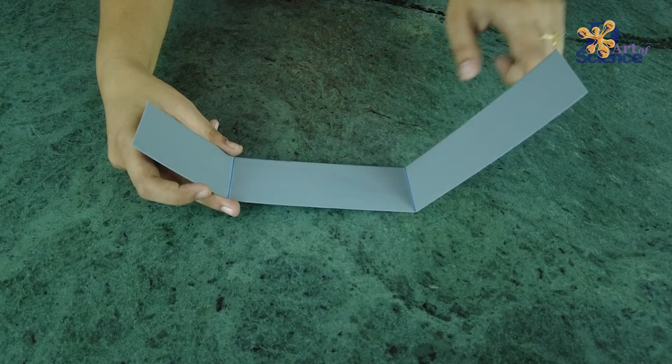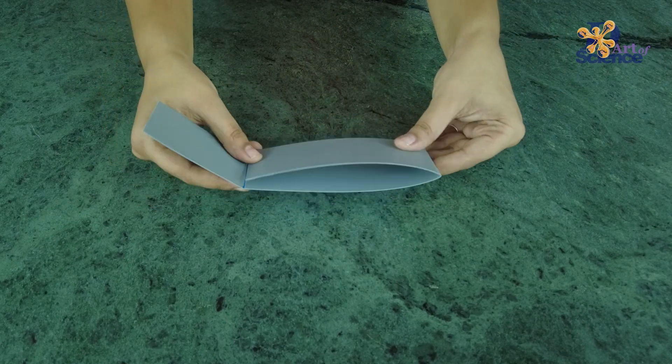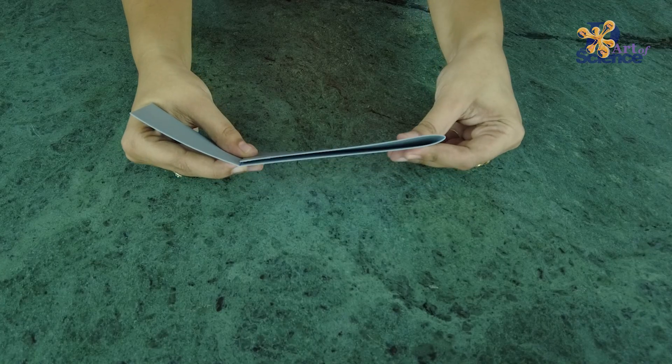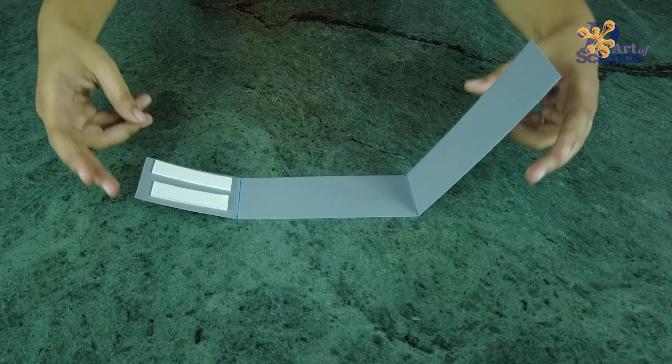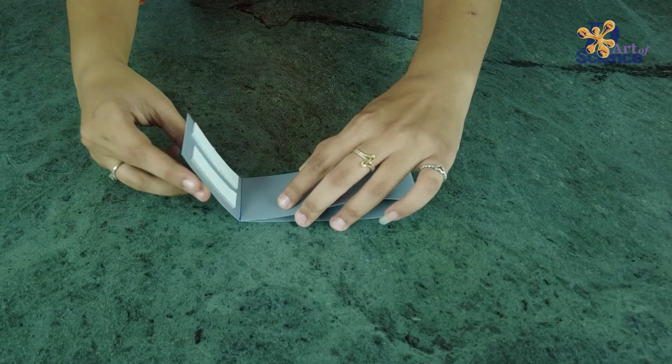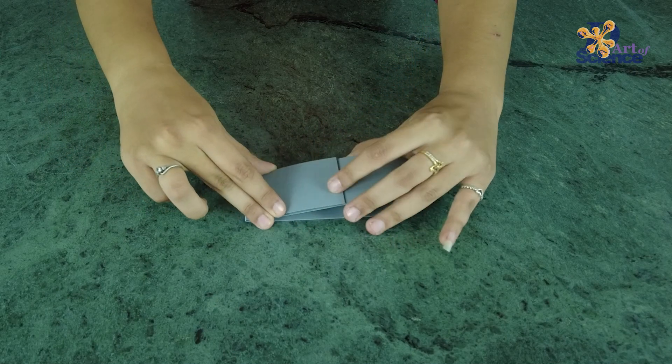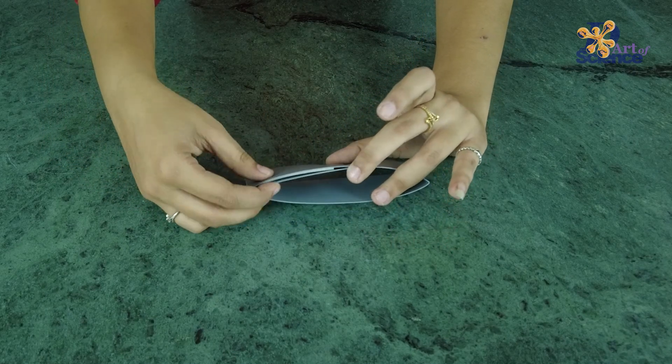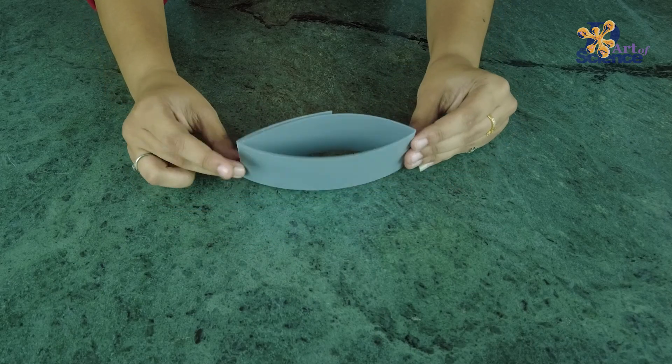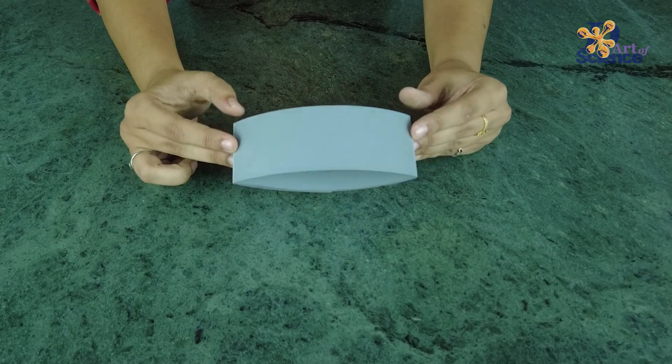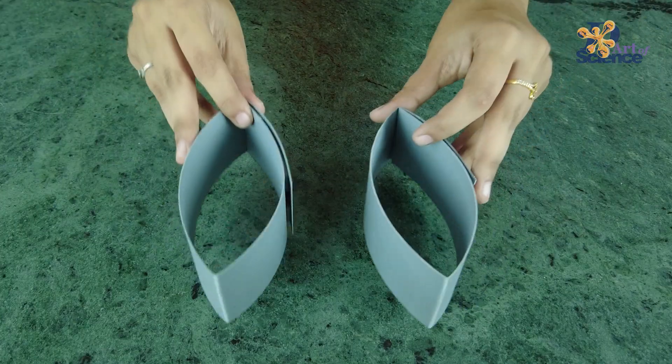Make sure that these two pieces are equal in length. Use double-sided tape on this piece and stick it as shown. These are our molds for convex lens. Repeat the same process for the other long piece as well.